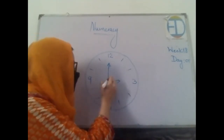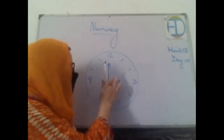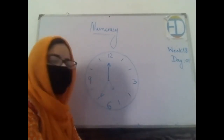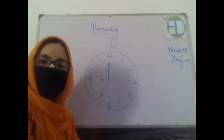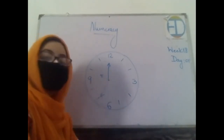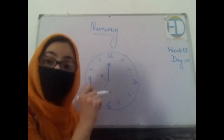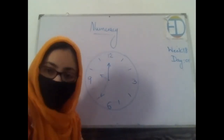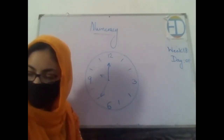For example, if the hour hand is pointing here, you will call this as 3 o'clock. Similarly, if instead of 3 it points toward 5, you will call it 5 o'clock. If it points toward 9, it will be called 9 o'clock. If it points toward 10, you will call it 10 o'clock. What is common in all of these is that the minute hand will always point toward 12, which means one complete hour has been passed and the next will start. We read this as 2 o'clock, 3 o'clock, 4 o'clock, 5 o'clock, 6, 7, and so on.